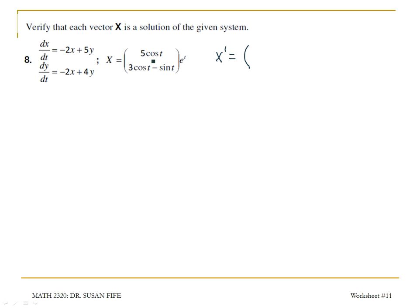I need to be careful because I have what I have inside the matrix, and then I have e to the t outside. So I'm going to use the product rule — this is my u times v. For my x prime, I'm going to get the derivative of 5 cosine t, which gives me negative 5 sine t. That's my u prime times v, which is e to the t, plus v prime — also e to the t — times u.